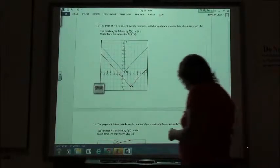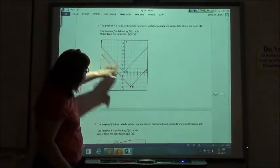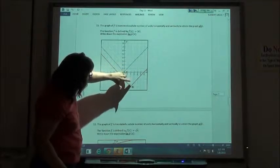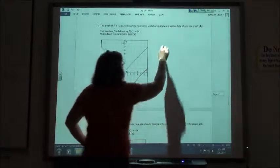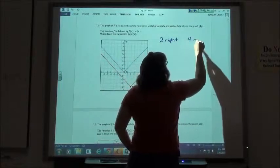So on number 11, if I look at this graph, this is an absolute value function. I want this graph to go 2 to the right and 4 down.